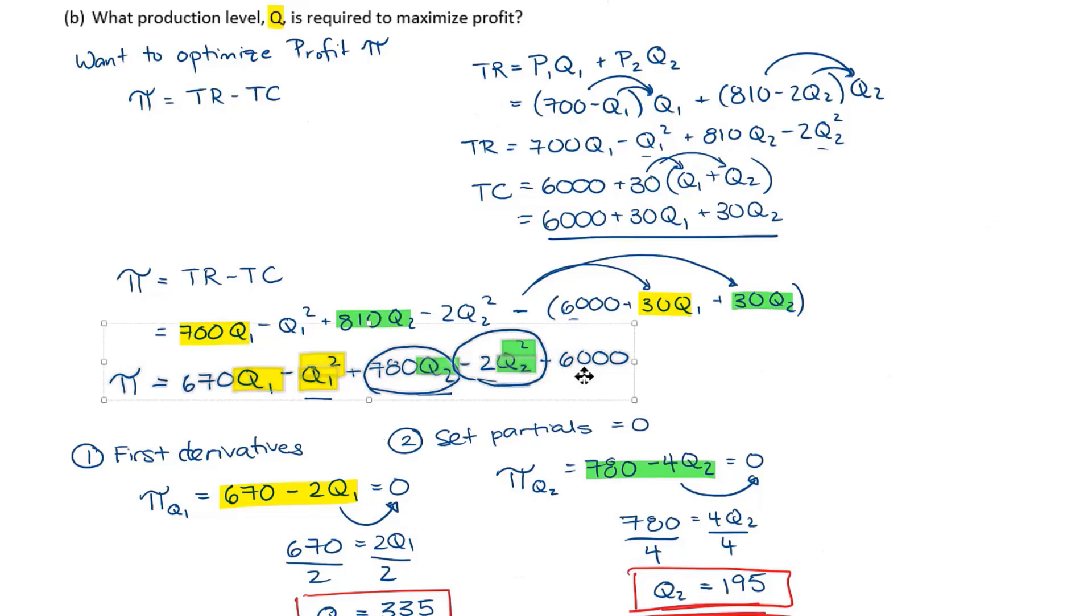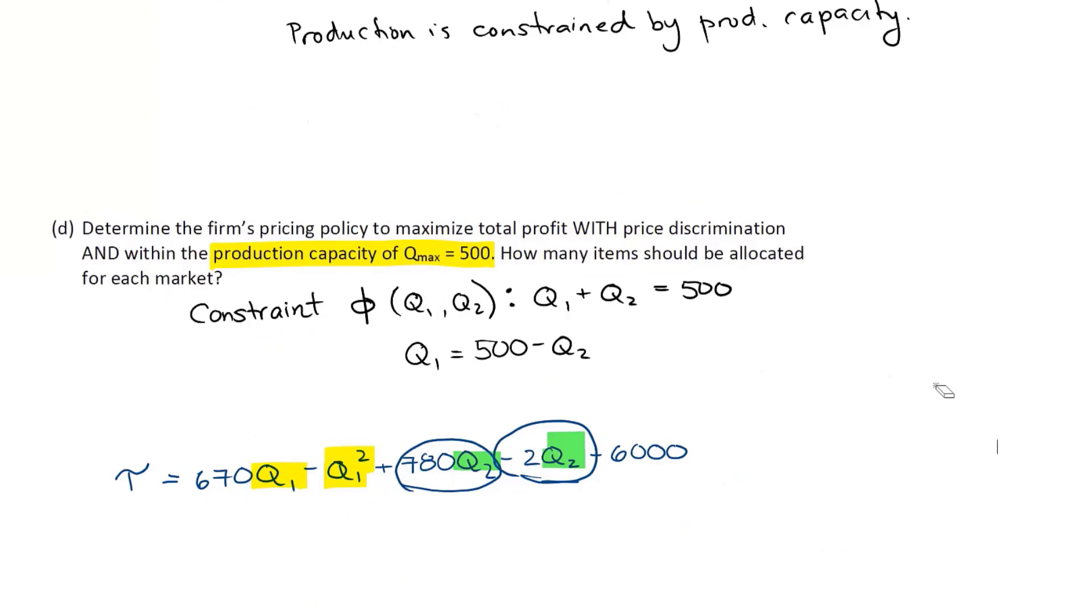Here's my profit function. And what I'm going to be doing here, wherever I see Q1, I'm going to replace it by 500 minus Q2. And this way, I'm going to be embedding the constraint into my profit equation. So this is 670 times every time I have Q1, it's going to have this constraint.